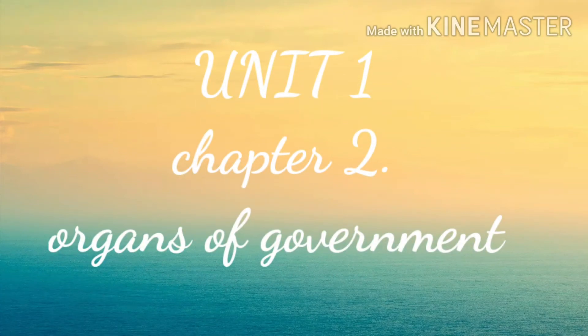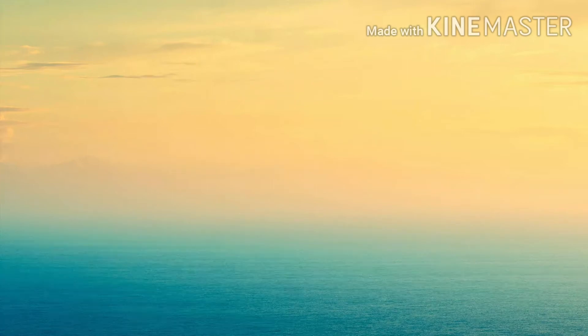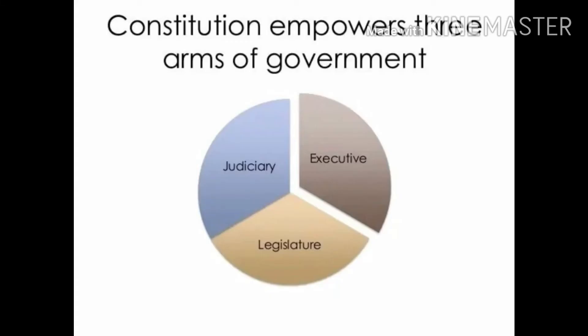Unit 1, Chapter 2: Organs of Government. The first chapter has been removed by the CBSE. In this chapter, we will study the different organs of the government — that is, the Judiciary, Executive, and Legislature.